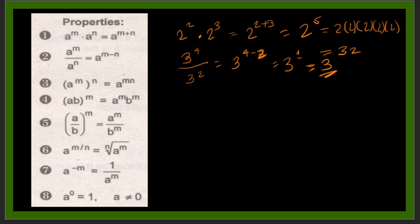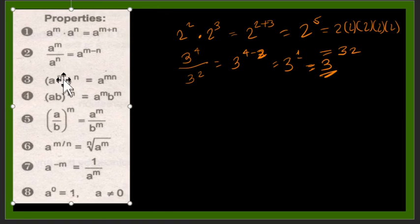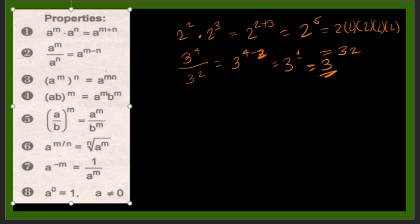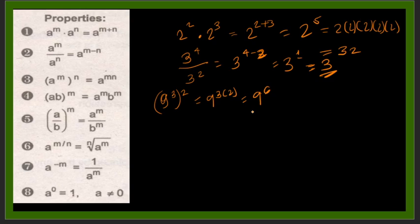Property 3: a raised to the power of m, quantity raised to the power of n, equals a raised to the power of m times n. For example, 9 raised to the power of 3, quantity raised to the power of 2, equals 9 raised to the power of 3 times 2, which is 9 to the 6th. Using a calculator, that equals 531,441.